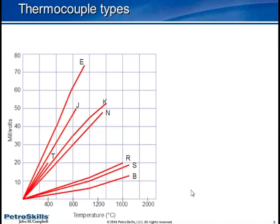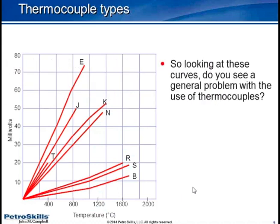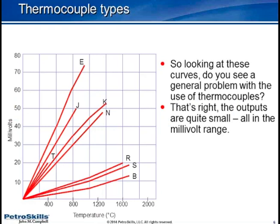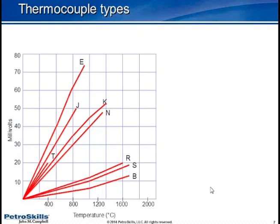There is a general problem with the use of thermocouples. The outputs are very small—we're talking about millivolts. In the case of type R, it's producing at 1,600 degrees only about 20 millivolts. So it's very small. The other problem is that it's not linear. What is the relationship between the actual voltage output and the temperature?